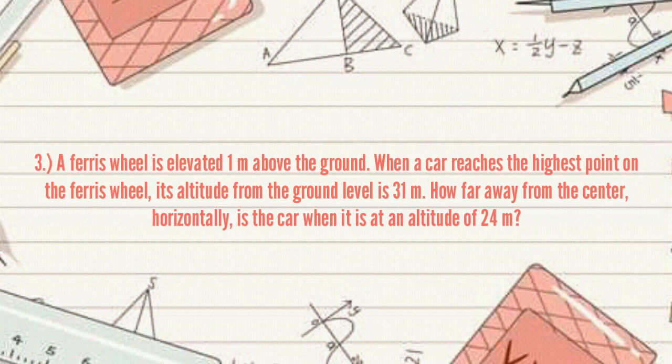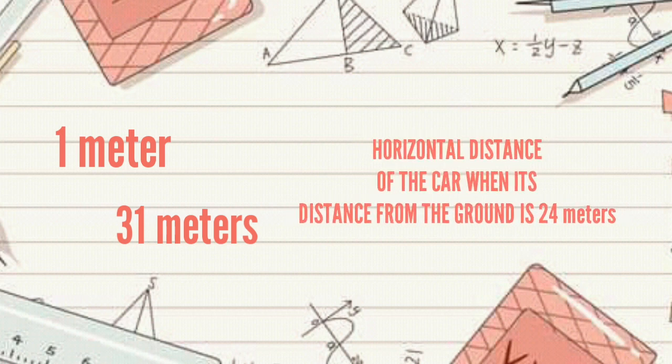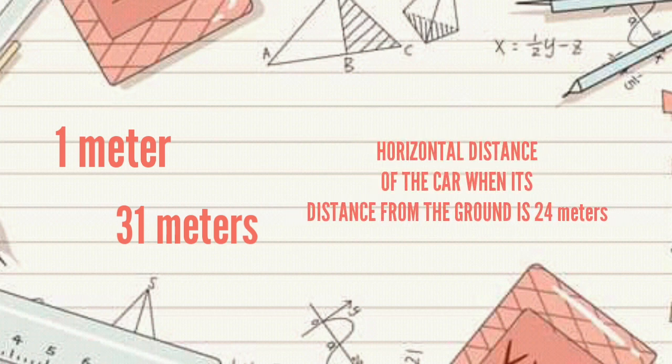A ferris wheel is elevated 1 meter above the ground. When a car reaches the highest point on the ferris wheel, its altitude from the ground level is 31 meters. How far away from the center horizontally when it is at an altitude of 24 meters? We have the height of the ferris wheel above the ground which is 1 meter. Height of the car at the highest point is 31 meters. Now, we will find the horizontal distance of the car when its distance from the ground is 24 meters.